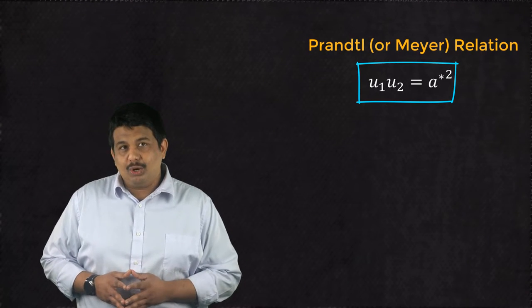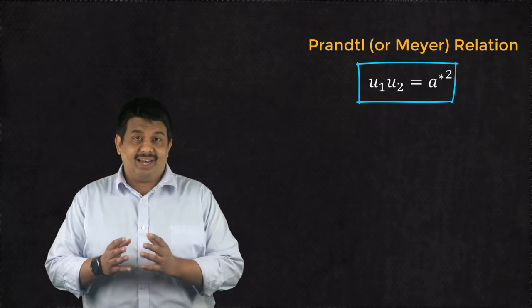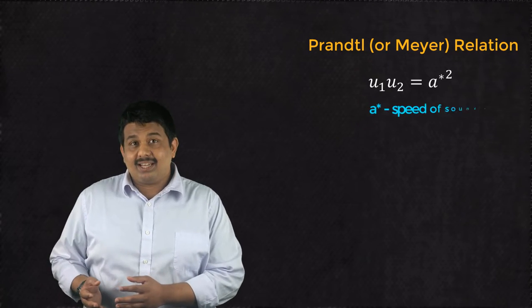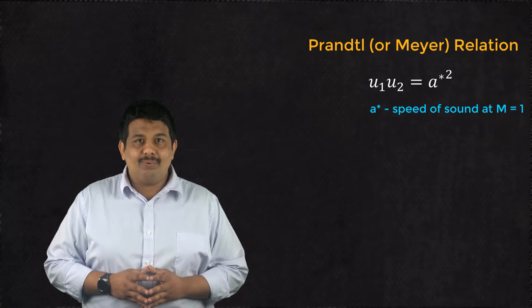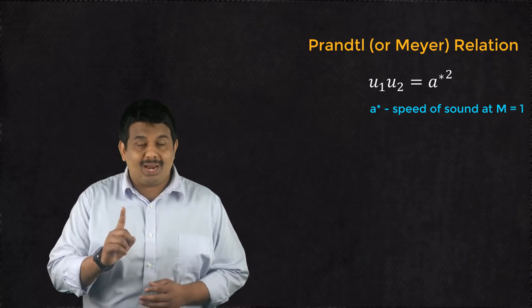This is popularly known as the Prandtl or Major relationship. And A star refers to the speed of sound where the local Mach number is equal to 1.